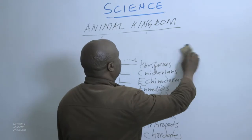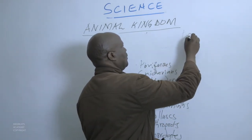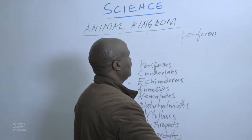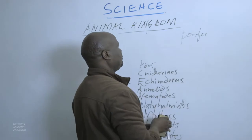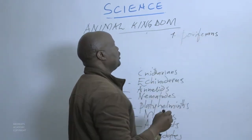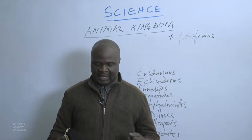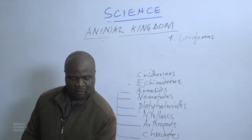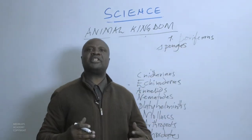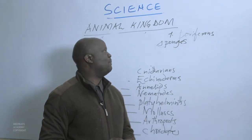We shall start with the first phylum, Porifera, and see their characteristics. Porifera are commonly called sponges. Their bodies are in spongy form and they live in water, mostly found in a marine environment.